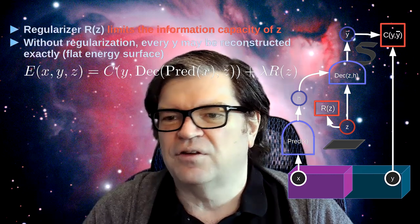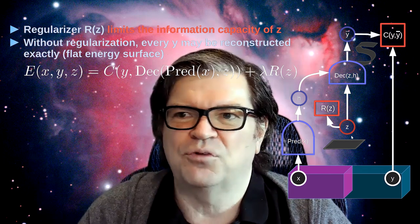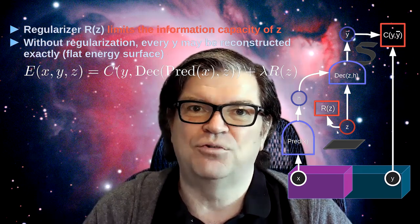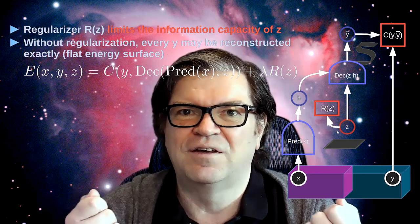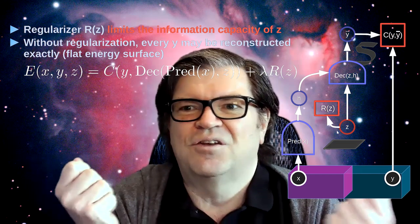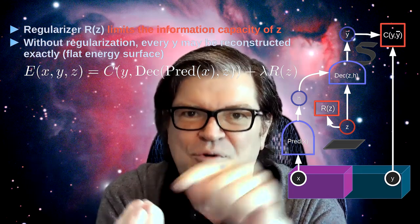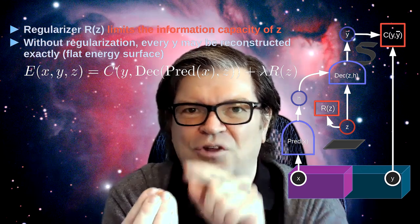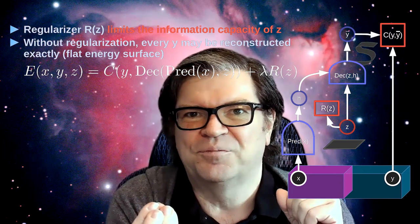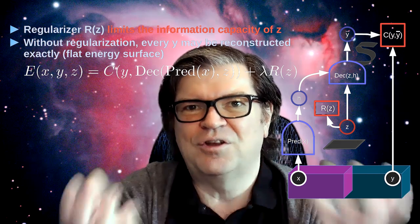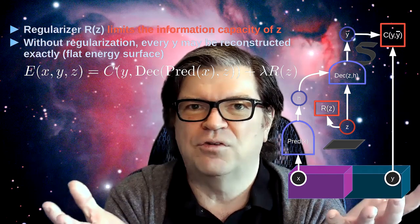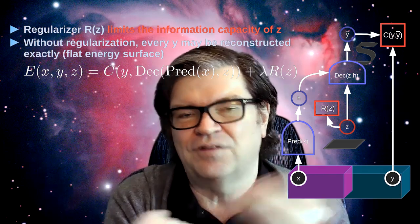If the latent variable Z has too much capacity — too high a dimension, or the set in which you choose it is too large — there's always going to be a value of Z giving zero energy, making the energy surface flat. K-means solves this by making Z a discrete variable that can only take k values. The information capacity is log-base-2-k bits, so there are only k points in Y-space that can have zero energy — the locations of those k prototypes. That's a way of limiting the capacity of Z and, as a consequence, limiting the volume of Y-space that can take low energy.